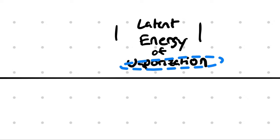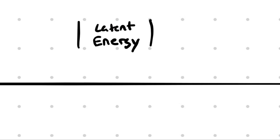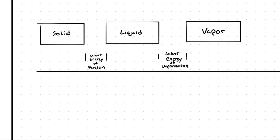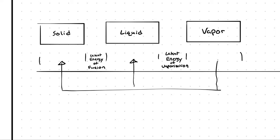The transition between liquid and vapor is called latent energy of vaporization, which is something you can look up for a substance. The transition between solid and liquid is called latent energy of fusion — again, something you can look up. All three regions between the latent energies represent the sensible energy associated with that phase. For our purposes, the phase transitions are all neat, orderly lines — there are solid boundaries between what is and is not a certain type of phase.